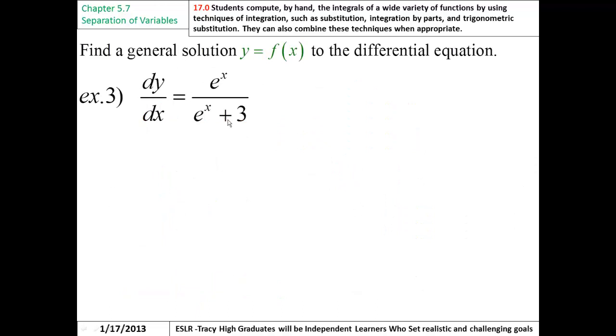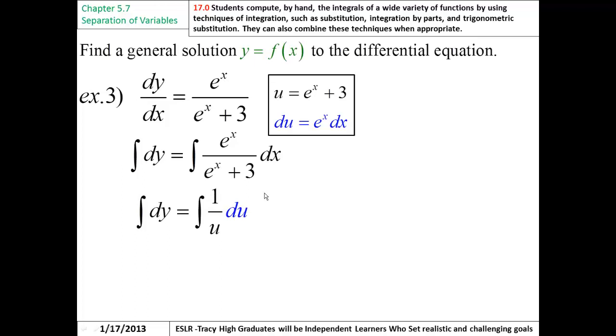Alright, another one here, multiplying the dx over, you get this, integrating some u substitution, 1 over u, 1 over e to the x plus 3. The derivative with respect to x of u is e to the x, multiplying that around, you get this, and then you stick your ln in there because you're integrating the 1 over u, dy integrates to y, and you plug your u back in because you always want to leave this in terms of x. And you have your constant.